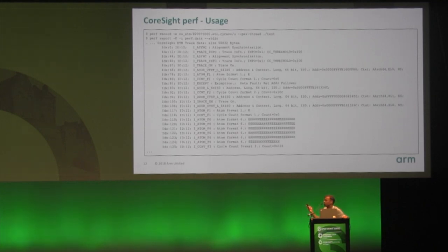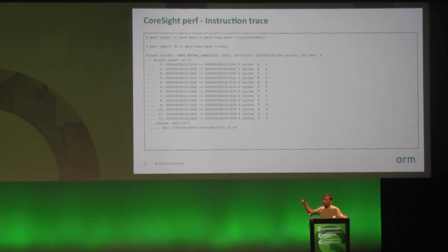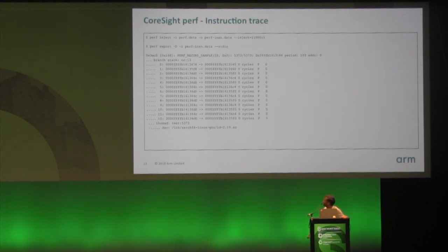This raw output may not be very useful unless you decode it back with the program text. Perf inject can do that for you — it goes through the program text and generates synthesized events, showing where jumps happen.